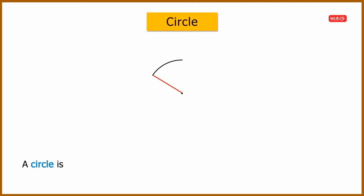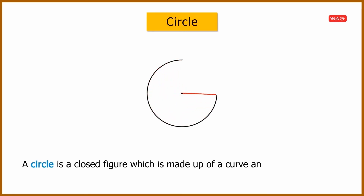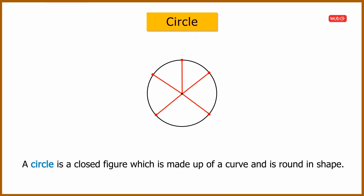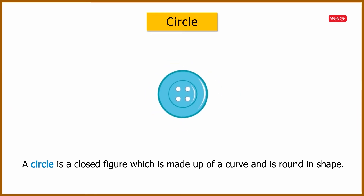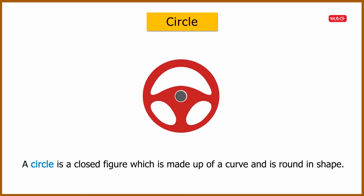A circle is a closed figure which is made up of a curve and is round in shape. All the points on the circle are equidistant from a central fixed point, which is called the center of the circle. We can see circles all around us — pizza, tires, buttons, rings, and steering wheels are some examples of circular shapes.